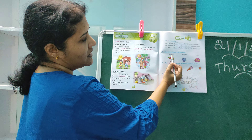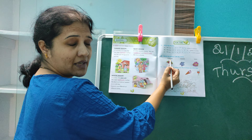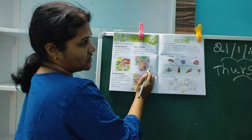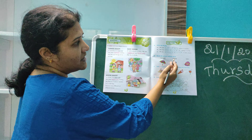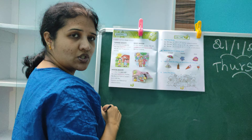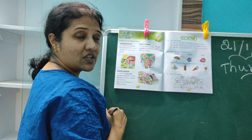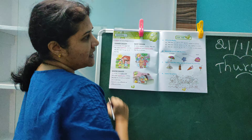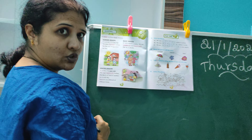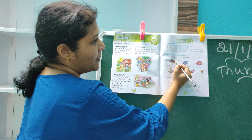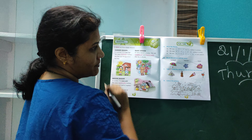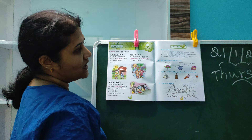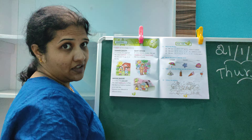Now match the picture with the word. What is this? This is summer. In summer what type of clothes will you wear? Cotton clothes, right? You will wear a cotton shirt. In winter what kind of clothes will you wear? You will wear clothes made of wool, like the sweater. And in rainy season what will you use? You will use an umbrella to protect you from the rain.